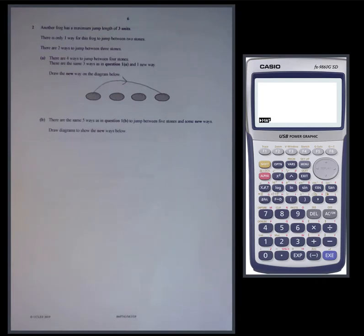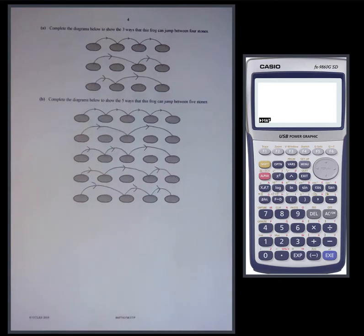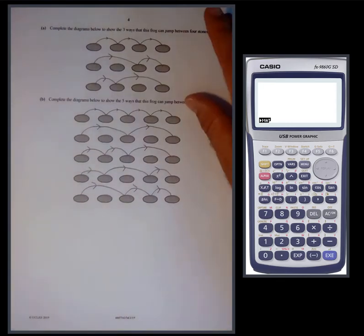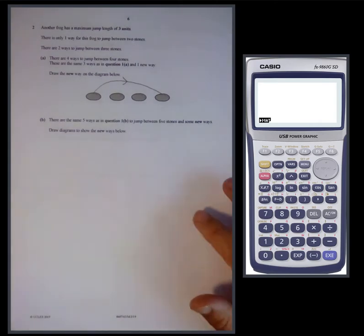There are the same five ways as in question 1b to jump between five stones, plus some new ways. Draw diagrams to show the new ways. For five stones, we've already considered all possibilities using jumps of one or two. Our new ways are going to be ways that utilize the new jump of three units.